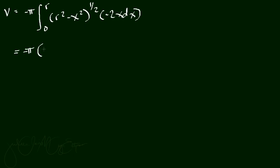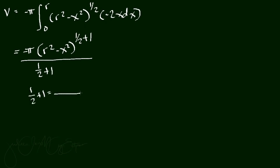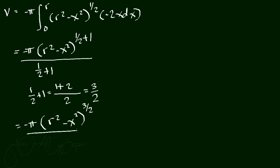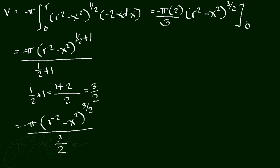Applying the power rule: the integral gives negative pi times (r squared minus x squared) raised to (1/2 + 1) over (1/2 + 1). Computing 1/2 plus 1 with LCD of 2: that is (1 + 2)/2, which equals 3/2. So the result is negative pi times (r squared minus x squared) raised to 3/2, divided by 3/2, evaluated from 0 to r.